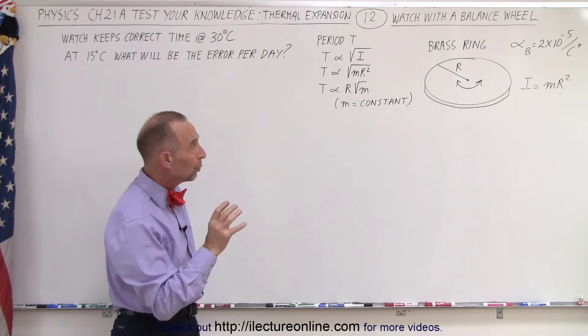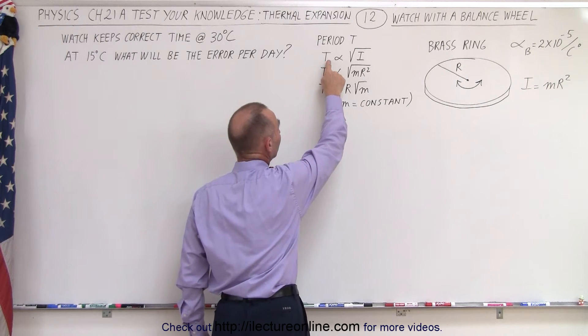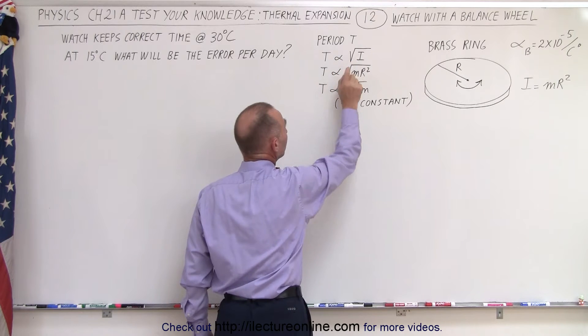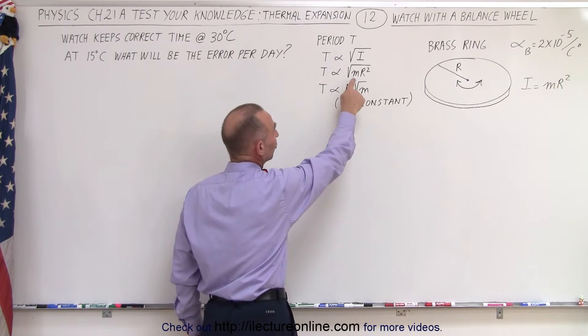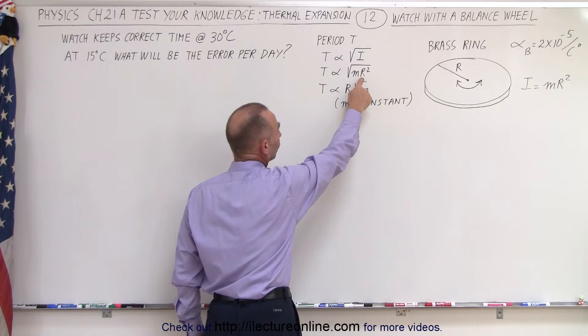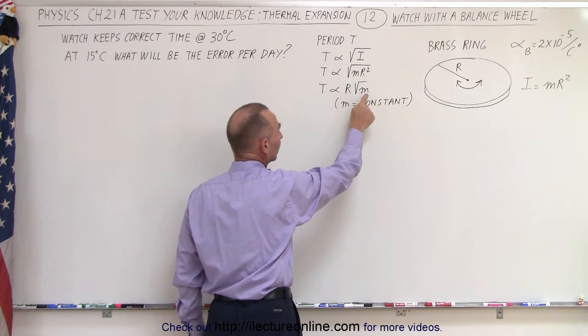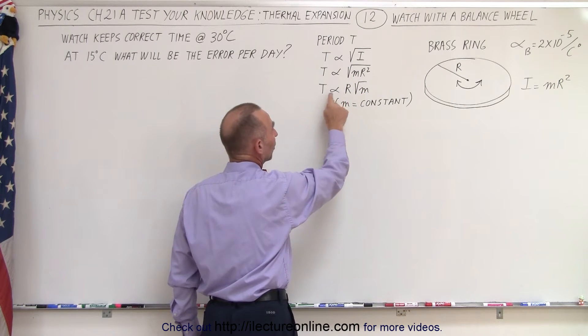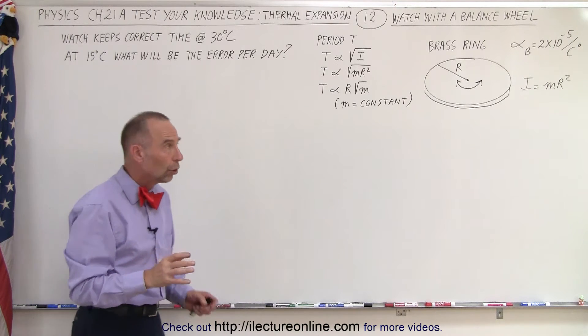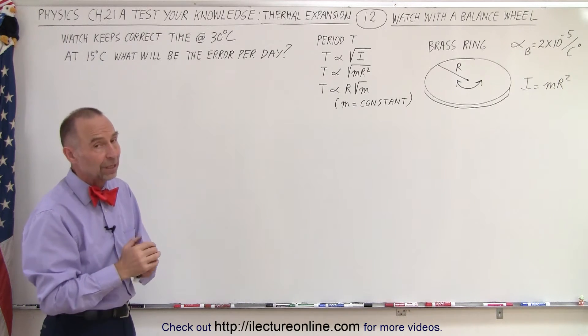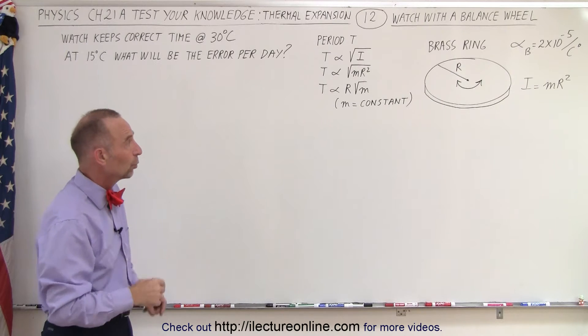Now we realize that the period of oscillation is proportional to the square root of the moment of inertia, which is MR². So R² take the square root, R comes out. M is a constant, so essentially the period is proportional to the radius of that brass ring. And with a change in temperature, the radius will change.